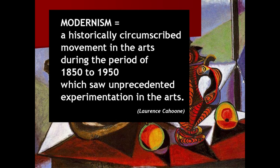There are several definitions for modernism. One of them by Lawrence Cahoon goes: modernism is a historically circumscribed movement in the arts during the period of the 1850s to 1950s, where we saw unprecedented experimentation in the arts. This is not really a definition I would approve of, since it stretches the beginning of modernism to a period where the literary scene in Britain was still dominated by realist writing, so 1850 is too early as a start date.